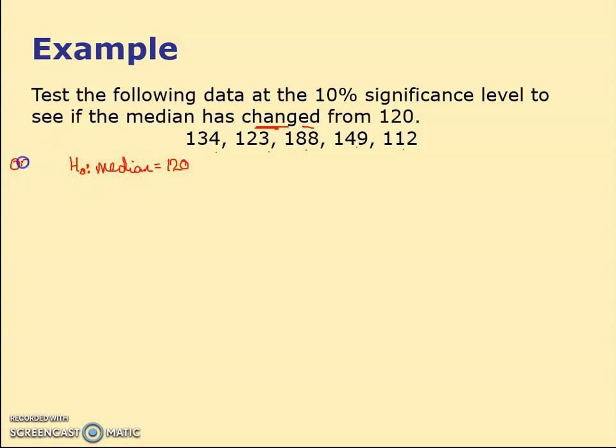On OCR exam board, we just write median equals, but other exam boards require the proper Greek letter. It says changed, so it doesn't imply a direction - it's a two-tailed test, not equal to 120. Now I go through the five numbers and decide whether they're above or below 120: 134 is above, 123 is above, 188 is above, 149 is above, 112 is below.